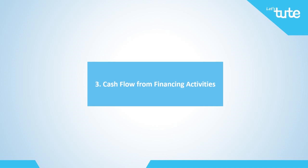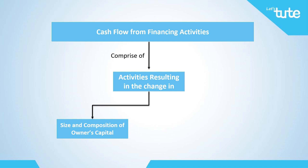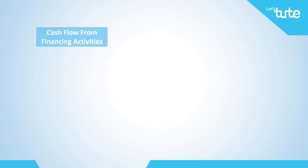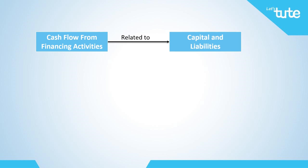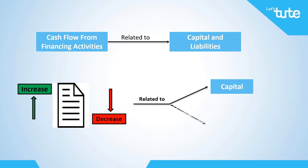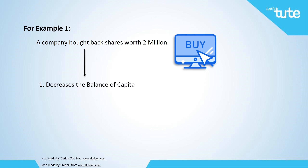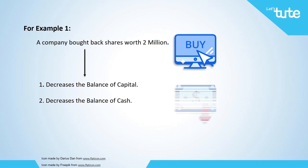Now let's move to the third activity within the cash flow statement: cash flow from financing activities. Financing activities comprise of activities resulting in the change of the size and composition of the owner's capital and borrowings of the enterprise. These activities are mainly related to the capital and liability side of the business, meaning any increase or decrease in cash flow related to capital and long-term funds would be recorded here. For example, a company bought back shares worth 2 million. As the company bought back the shares, there is a decrease in the balance of capital and simultaneously a decrease in the cash balance, as shareholders will be paid in cash.